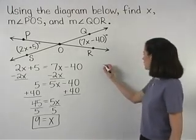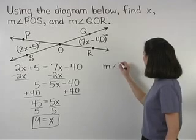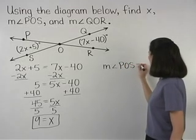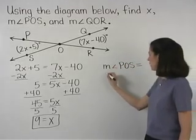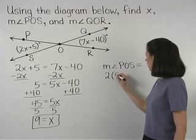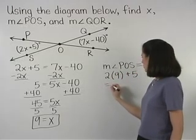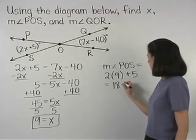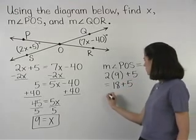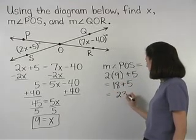So the measure of angle POS, which is 2x plus 5, is 2 times 9 plus 5, which is 18 plus 5, or 23 degrees.